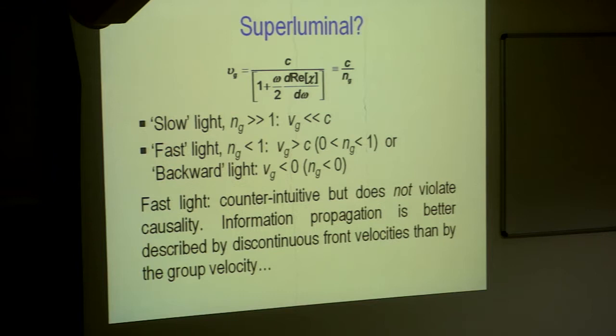Now, what happens if I have this one is less than 1, then v g would become greater than c or I can actually have a backward light where group velocity would become negative. When we saw it, there is nothing that we have done here that violates Maxwell or anybody. Essentially, it talks about fast light, not just slow light that counter-intuitive, but it does not violate Einstein's causality.